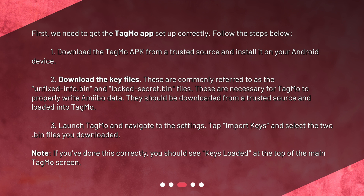Third, launch Tagmo and navigate to the settings. Tap Import Keys and select the two .bin files you downloaded. Note: if you've done this correctly, you should see 'Keys Loaded' at the top of the main Tagmo screen.